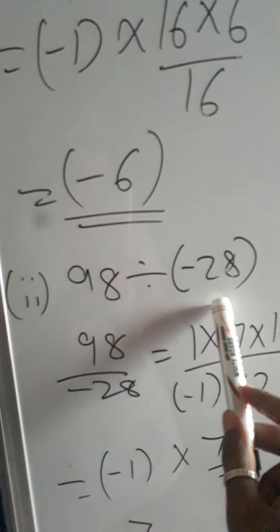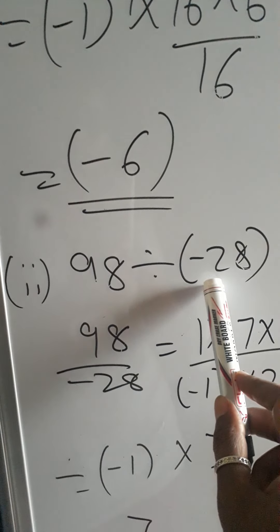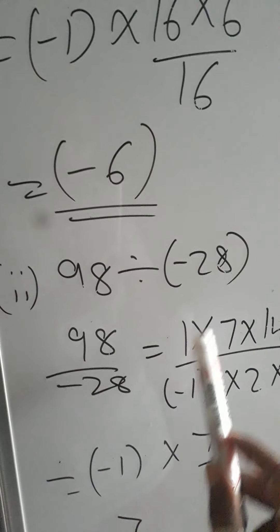Now this, simply you can write once you have understood: 98 divided by minus 28. It is a rule that we cannot keep the denominator with the negative sign in the answer.